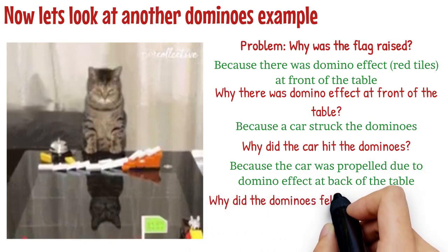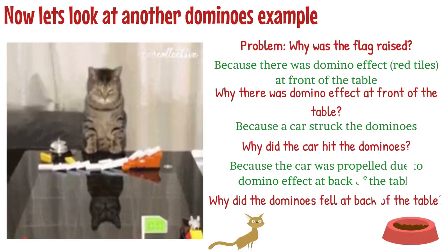Because the car was propelled due to domino effect at back of the table. Why did the dominoes fall at back of the table? Because the cat rang the bell as she was hungry. Never leave your cat starving, she will ruin your life.